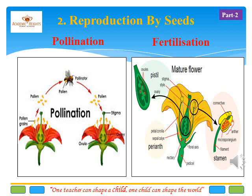Slide 10. In this slide we are going to see how the process of pollination and fertilization takes place. Pollination is the transfer of pollen grain from the anther to the stigma of another flower. Once the pollen falls on the stigma of the pistil, the pollen tube goes downwards and reaches the ovary at the bottom of the pistil. The male and female sex cells fuse in the ovule of the ovary. This fusion is called fertilization.